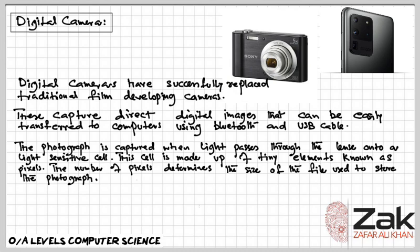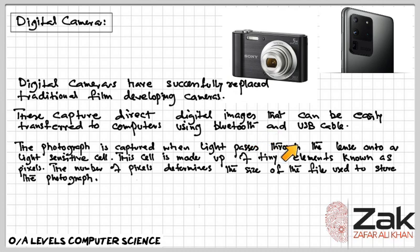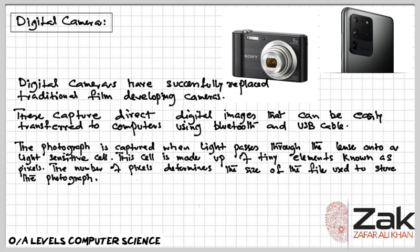Digital cameras have successfully replaced traditional film developing cameras. They capture direct digital images that can be easily transferred to computers using Bluetooth and USB cable. The photograph is captured when light passes through the lens onto a light-sensitive cell, which is made up of tiny elements known as pixels. The number of pixels determines the size of the file used to store the photograph.